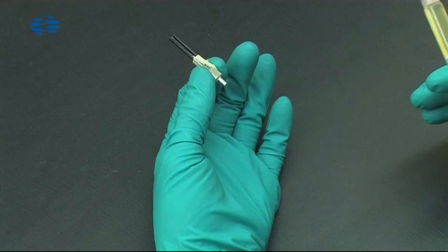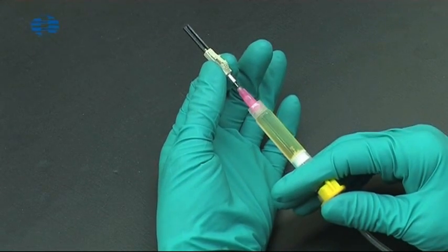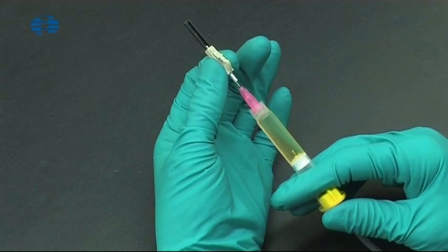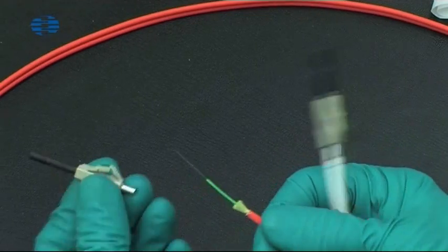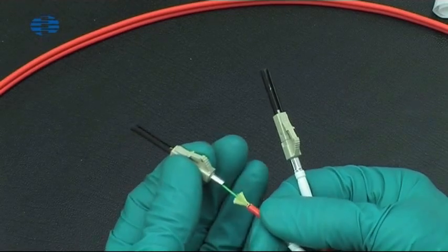Now the cable ferrule is attached to the fiber using epoxy adhesive dispensed by an automatic device. As soon as the epoxy has been introduced into the ferrule, the optical fibers are inserted.